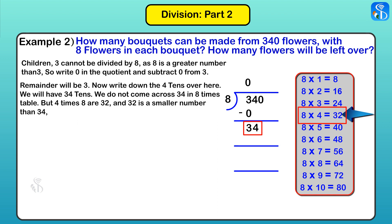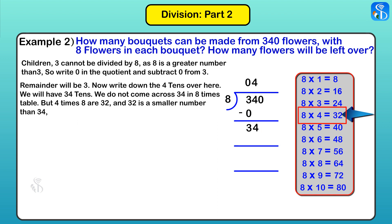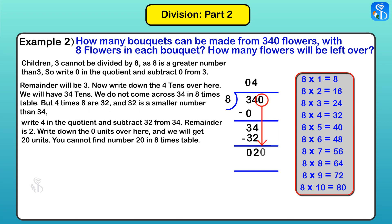32 is the closest to 34, so write 4 in the quotient and subtract 32 from 34. Remainder is 2. Now bring down the 0 units, making 20 units.